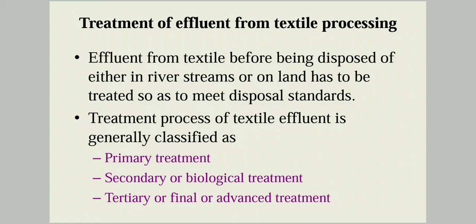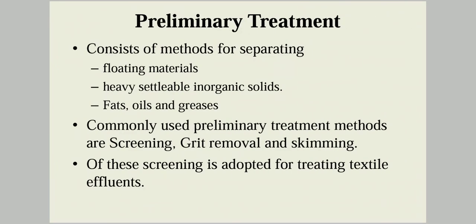The treatment process of textile effluent is generally classified as primary treatment, secondary or biological treatment, and tertiary, final, or advanced treatment method. These three methods are adopted step by step in chronological order. Preliminary treatment is also referred to along with primary treatment and is often combined and called primary treatment.